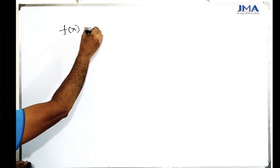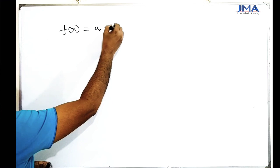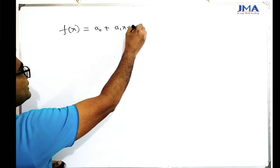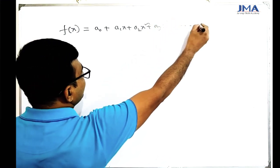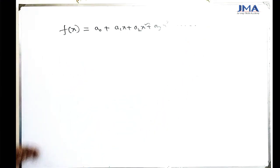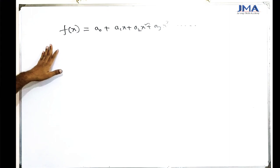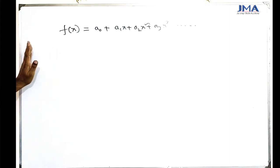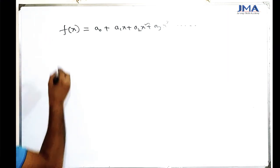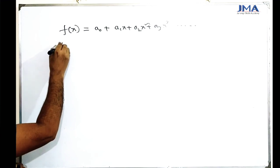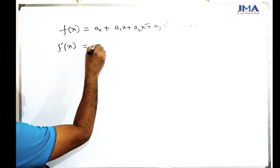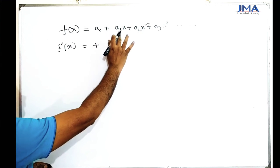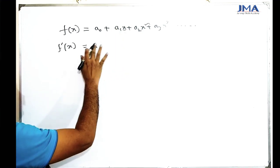A function can be written as: a0 plus a1·x plus a2·x squared plus a3·x cubed, and so on. On the 5th count we have 0, and on the 6th count we also have 0, continuing to infinity. A0 is 0.